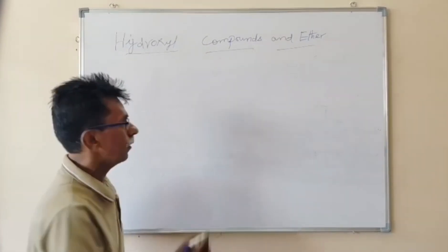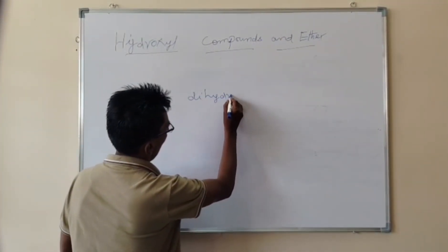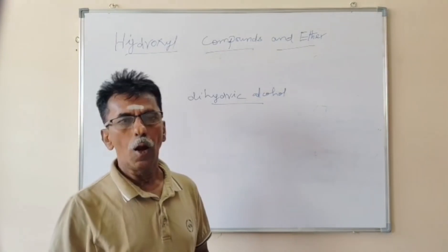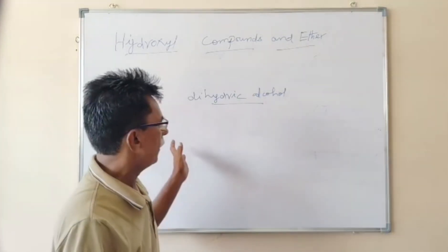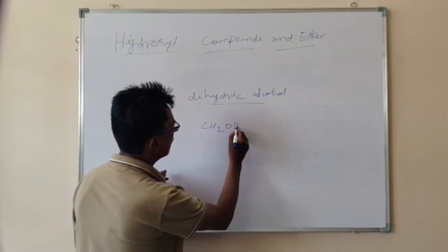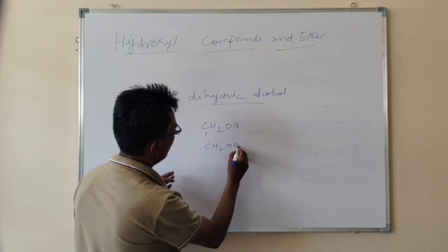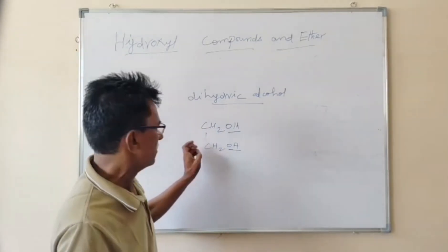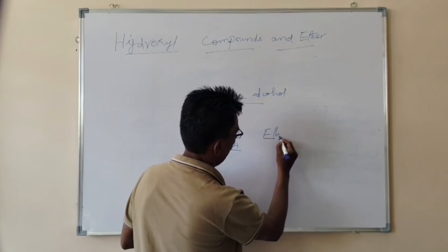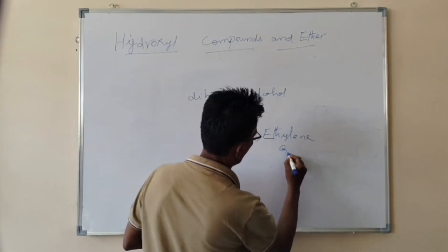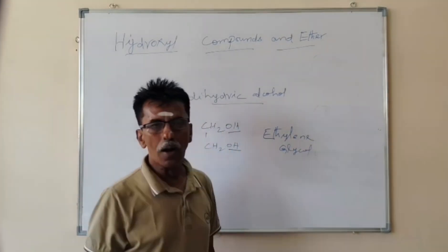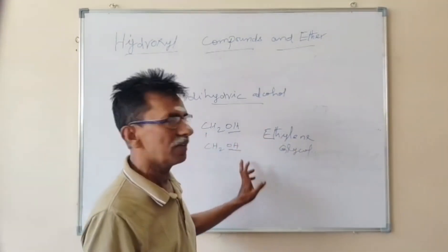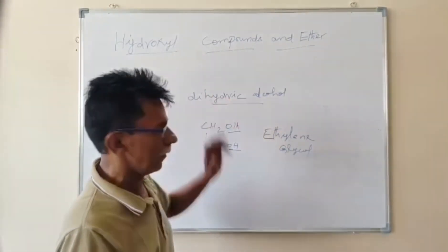Now we are going to see the Dihydric Alcohol. If any organic compound containing two OH groups in a single compound, it is called a Dihydric Alcohol. For example, a compound with two OH groups present in a single compound is an example of Dihydric Alcohol. The name of this alcohol is called ethylene glycol. Alcohol is the common name and glycol is the IUPAC name. This compound comes from the ethylene molecule, so this alcohol is called ethylene glycol.